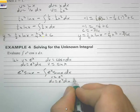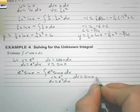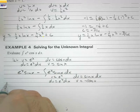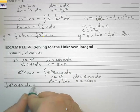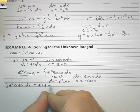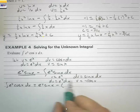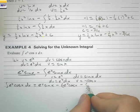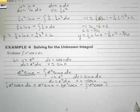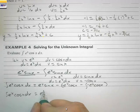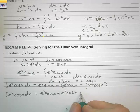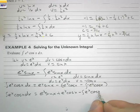We let the new u equal eˣ, du equals eˣ dx, and dv equals sin(x) dx, so v equals negative cos(x). Including the original expression, the integral of eˣ·cos(x) dx equals eˣ·sin(x), then minus the quantity: u times v which is negative eˣ·cos(x), minus the integral of v du which is negative eˣ·cos(x) dx. Taking care of all these negatives, we get eˣ·cos(x) dx equals eˣ·sin(x) plus eˣ·cos(x) minus the integral of eˣ·cos(x) dx.